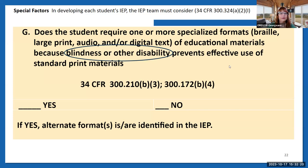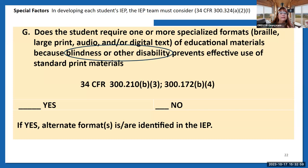If you're in a district that doesn't have this spelled out, you do need to make sure that you are talking about AIM in the IEP in some area — make sure that it is addressed and documented.